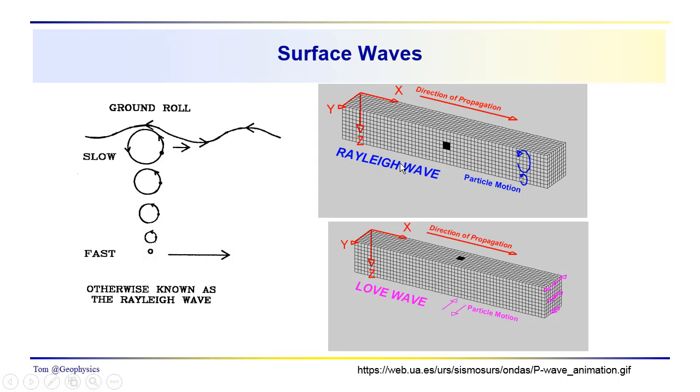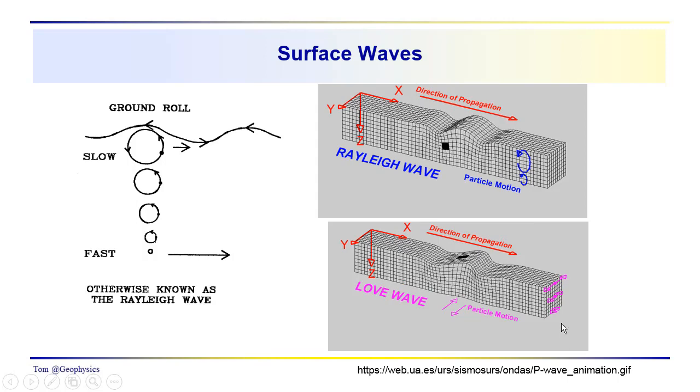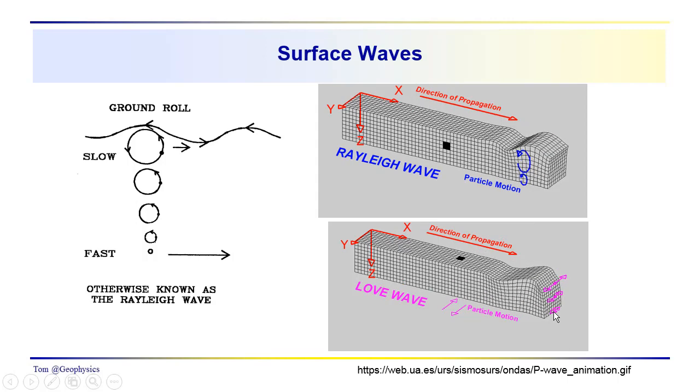So we have these surface waves, the Rayleigh wave and the love wave, both of which are dispersive. So the amplitude does extend down below the surface, but it's smaller with depth and usually higher frequency.